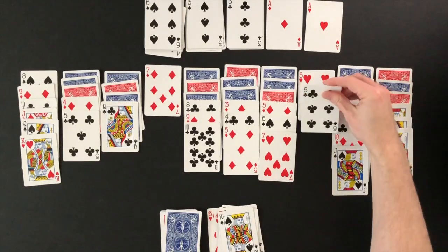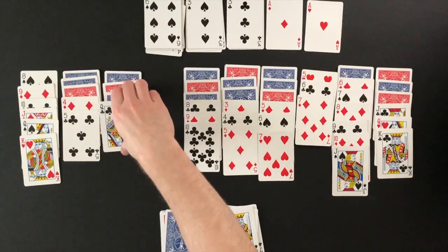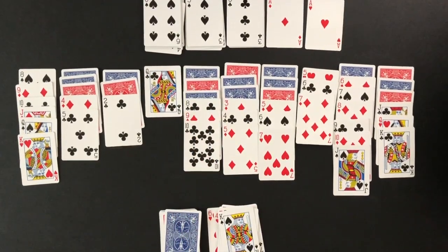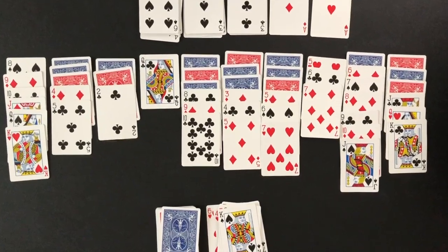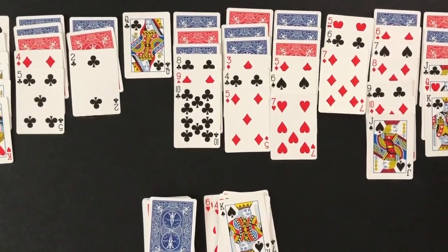If an open space becomes available within the layout any card can fill the open space. Only one card can be moved at a time. The top card of the waste pile can always be moved if possible. For a more challenging gameplay only allow one turn through the deck. For an easier gameplay turn the waste pile back into your deck when the deck runs out.